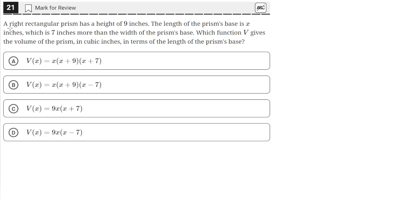A right rectangular prism has a height of 9 inches. The length of the prism's base is x inches, which is 7 inches more than the width of the prism's base. Which function V gives the volume of the prism in cubic inches in terms of the length of the prism's base?